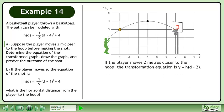If the player moves 2 meters closer to the hoop, the transformation equation is y = h(d - 2).